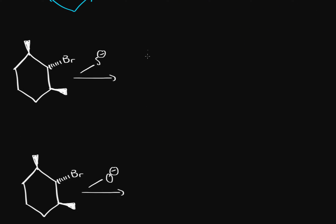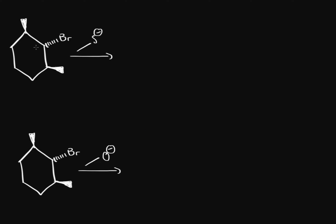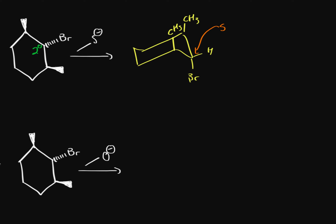What if you don't have a tertiary carbocation — how do you know when steric hindrance is too much? Here it looks like a secondary carbon, so you might think SN2 is fine, but let's look at the chair conformation. In the chair, we have a carbon group here, another here, then a hydrogen and bromine. The sulfur might try to attack from the backside, but these two carbon groups get in the way. Having one tertiary carbon next to a secondary carbon bearing bromine is enough steric hindrance to prevent SN2. So bromine has to leave and we form a carbocation.